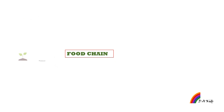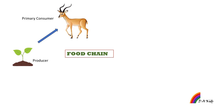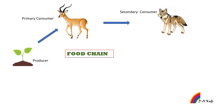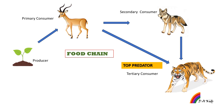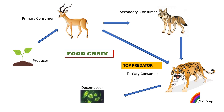Now, let's have a look at the food chain. Plants are the producers. Herbivores are the primary consumers. Secondary consumers are largely carnivores that feed on the primary consumers or herbivores. And then come the top predators, the tertiary consumers. Finally, this chain is completed by the action of decomposing microbes.